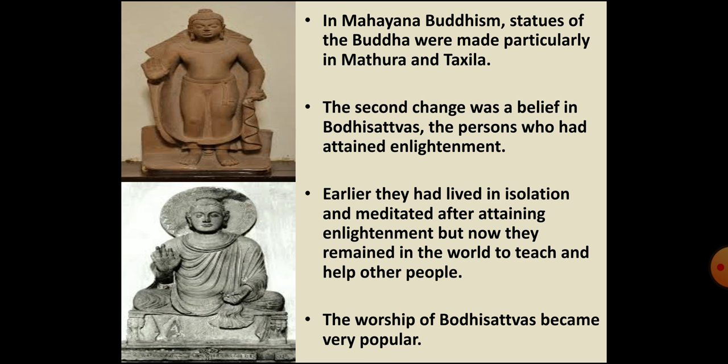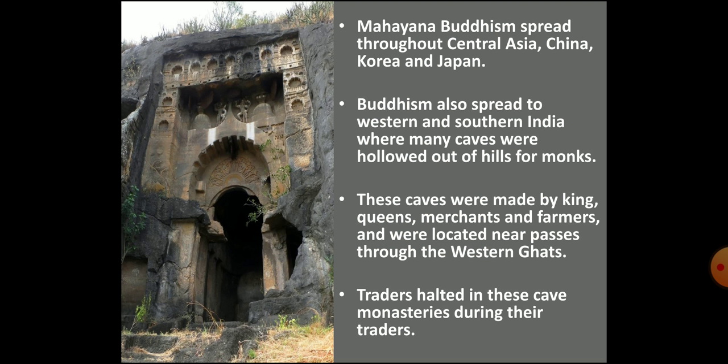Most of these statues were produced in Mathura — the first image here. Some statues were made in Takshila, like the second image. The second change that occurred in Mahayana Buddhism was a belief in Bodhisattvas. Bodhisattvas were those persons who had attained enlightenment. Earlier, the Bodhisattvas, after attaining enlightenment, were supposed to leave all worldly desires and live in complete isolation where they could meditate in peace. However, in new Mahayana Buddhism, the Bodhisattvas, even after attaining enlightenment, remained in the world and taught and helped other people. People started worshipping Bodhisattvas, and this practice became quite popular and spread all over Central Asia, China, and then in Korea and Japan. In India also, Bodhisattvas spread to Western and Southern parts.